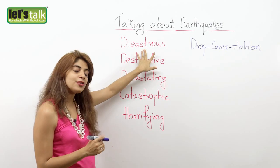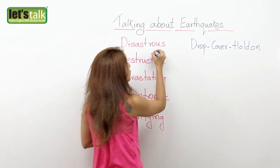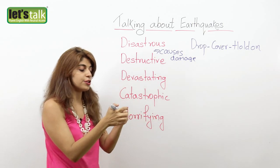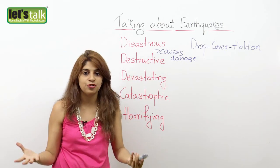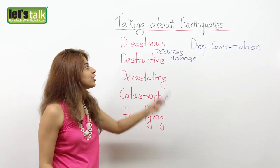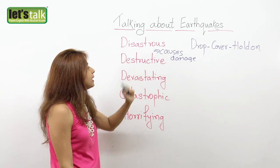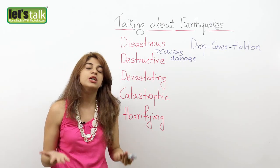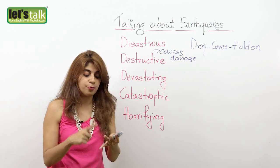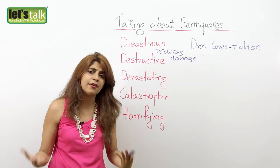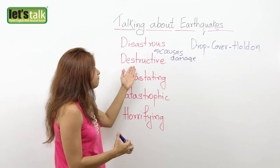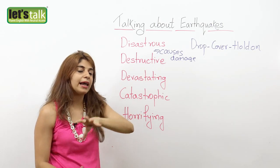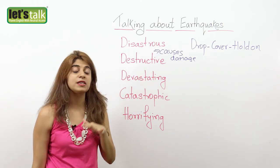Now let's look at some descriptive words to talk about an earthquake. The first is disastrous, meaning it causes a lot of damage. If there's a big earthquake, it's going to be disastrous because a lot of things would be damaged. The next word is destructive — we use this because a lot of things are destroyed: buildings collapse, bridges collapse, temples and old heritage structures are all destroyed. An area affected by an earthquake can be called destructive, as in 'it was a very destructive earthquake.'